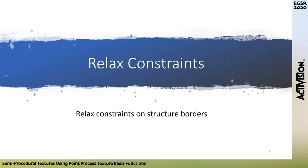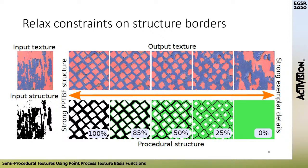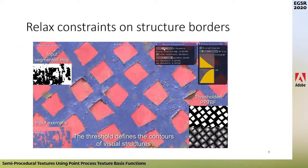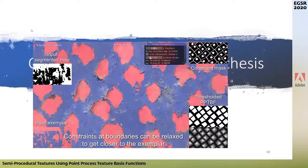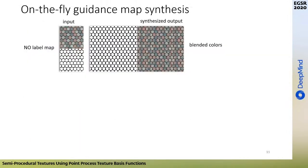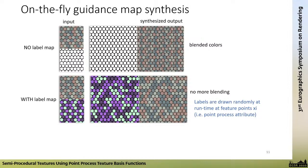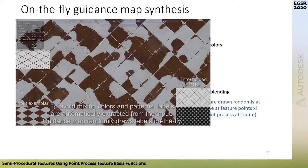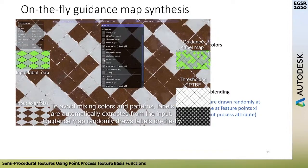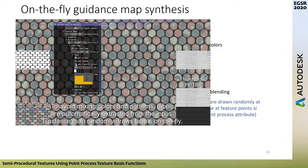We also add the ability to relax constraints on the borders of the structures. On the left you have the input exemplar; on the bottom, a PPTBF that is square-shaped. A slider lets you choose between full guided synthesis or re-injecting borders from the input. For textures with many colors, the solution is to use a label map. We extend our PPTBF to draw a label ID at runtime randomly for each feature point of the point process — totally free and on-the-fly.